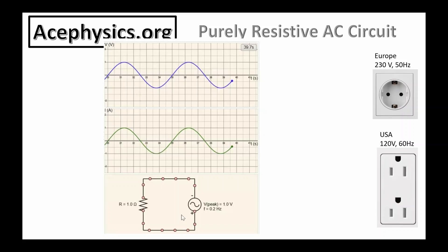Here's an example of a purely resistive AC circuit — a resistor connected to an AC power source. In any purely resistive circuit, all of the energy from the power supply is dissipated as heat in the resistor, whether the voltage is DC or AC. The key feature of a resistive circuit is that the voltage and current are in phase. When the voltage is a maximum, the current is a maximum; when the voltage is zero, the current is zero; and when the voltage is a minimum, the current is a minimum. The voltage of the power supply and the current reach their peak and zero values simultaneously.